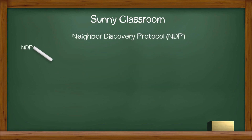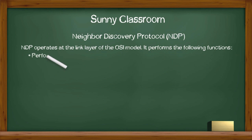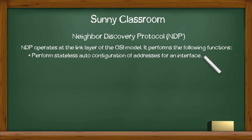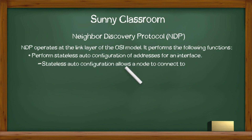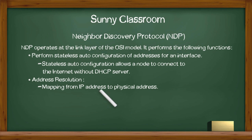NDP operates at the link layer of the OSI model. It performs the following functions: stateless auto-configuration of addresses for an interface. Stateless auto-configuration is an important feature of the IPv6 protocol — it allows a node to connect to the Internet without a DHCP server. Address resolution is the mapping from an IP address to a physical address. Neighbor Unreachability Detection, or NUD,